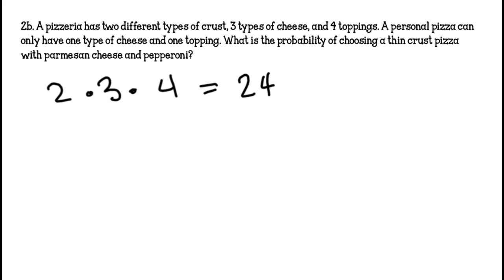A personal pizza can only have one type of cheese and one topping. What is the probability of choosing a thin crust pizza with Parmesan and pepperoni? So there would only be one combo of that. So you would do 1/24, circle it and that's your answer.